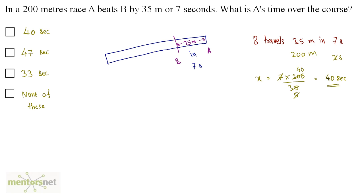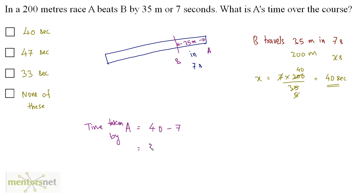So B takes 40 seconds to complete the race. How much will A take? A beats B by 7 seconds, which means A takes 7 seconds less than B. So the time taken by A equals 40 minus 7, which is 33 seconds. And that's our answer — option C.